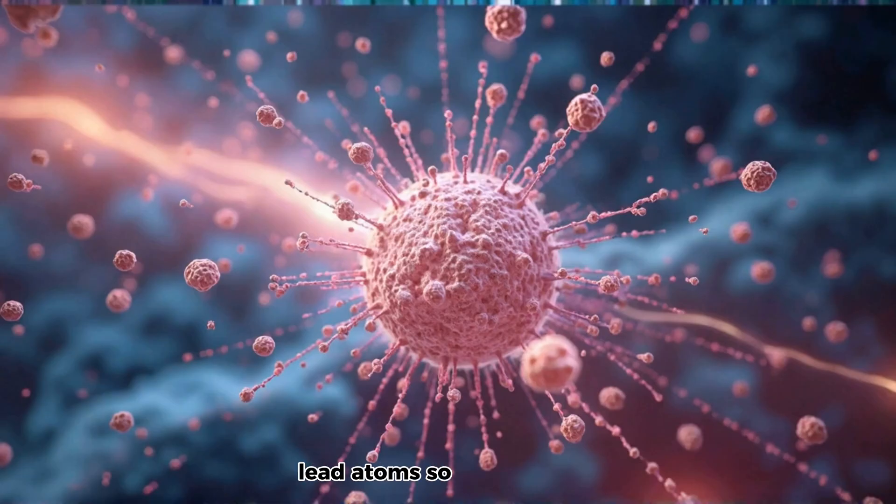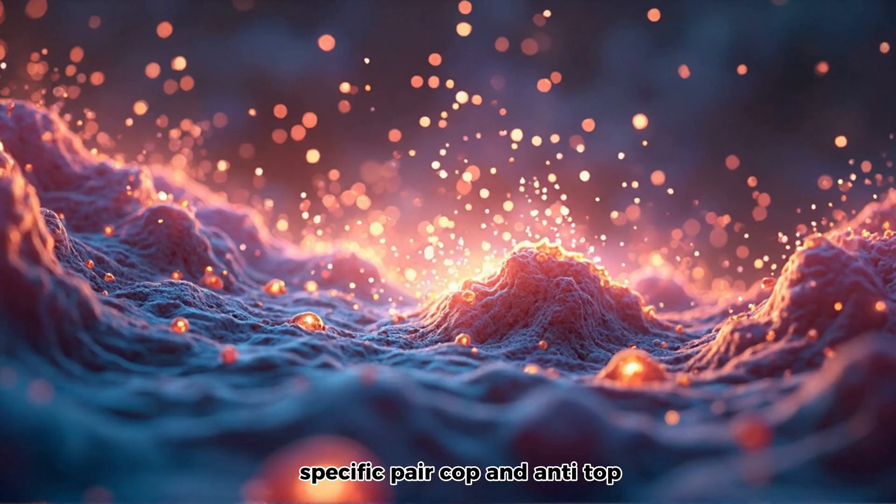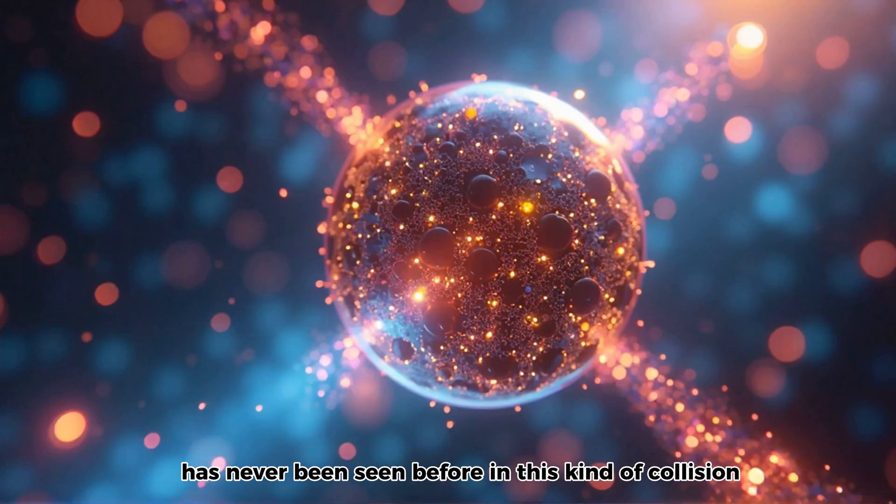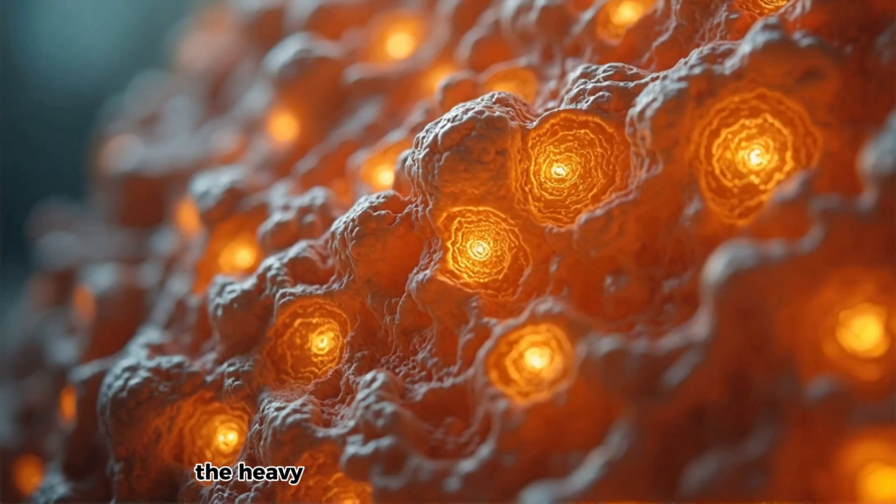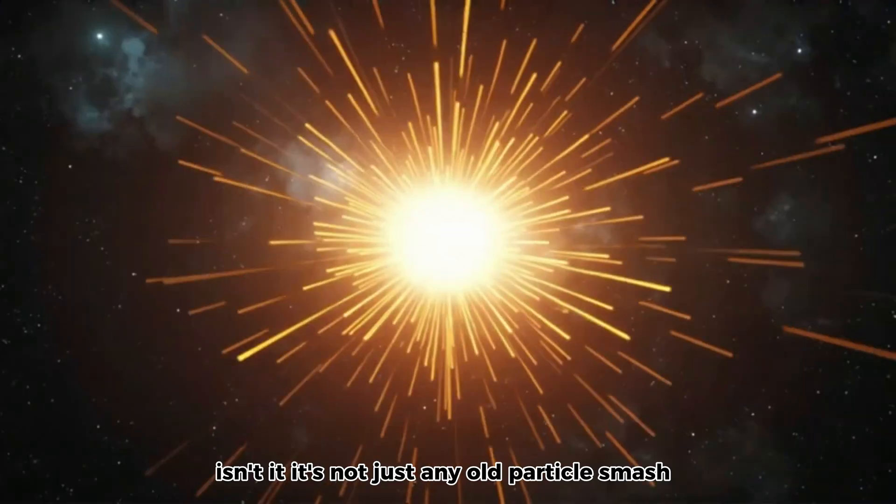And these appeared right after smashing lead atoms together with incredible energy inside the LHC. Lead atoms, so heavy ions. Right. And the really groundbreaking part, this specific pair, top and anti-top, has never been seen before in this kind of collision, a heavy ion collision. Lead on lead. And that detail, the heavy ion collision, that's really the crux of it, isn't it? It's not just any old particle smash-up.